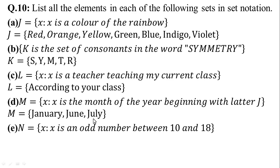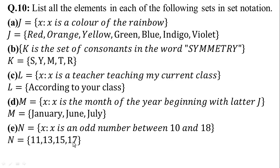In part E, N = {x : x is an odd number between 10 and 18}. We write the odd numbers between 10 and 18. In set notation, N = {11, 13, 15, 17}. Odd numbers are not divisible by 2, so these numbers are 11, 13, 15, and 17.